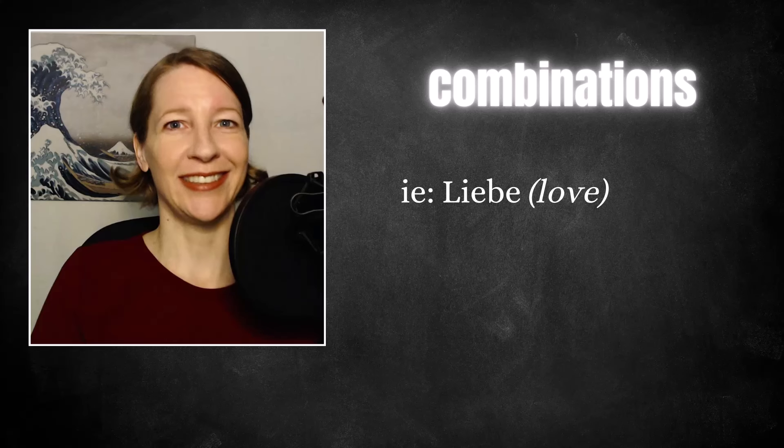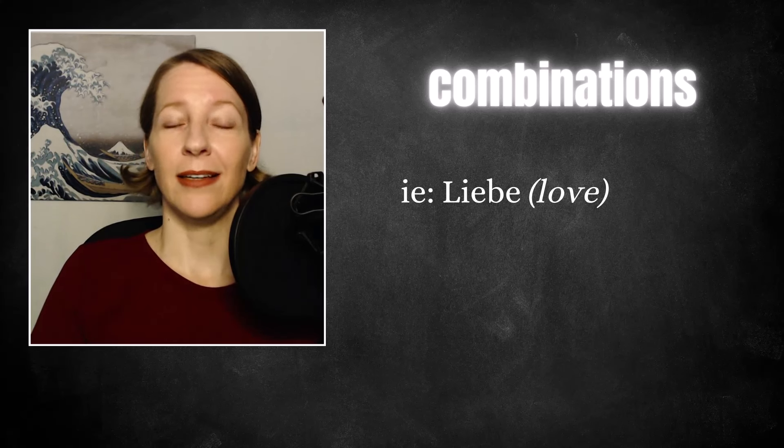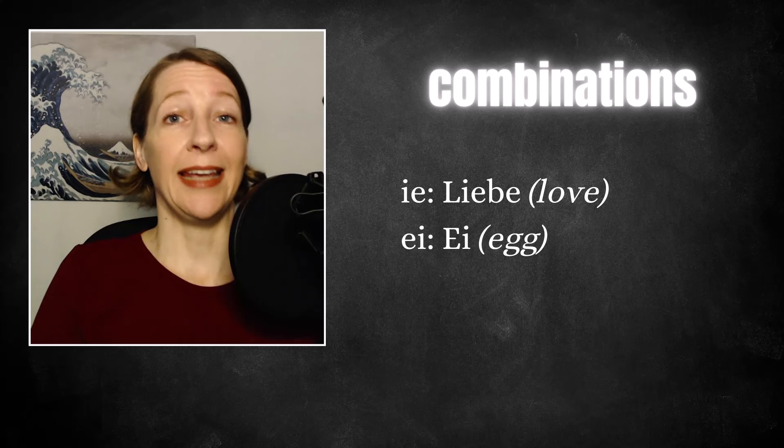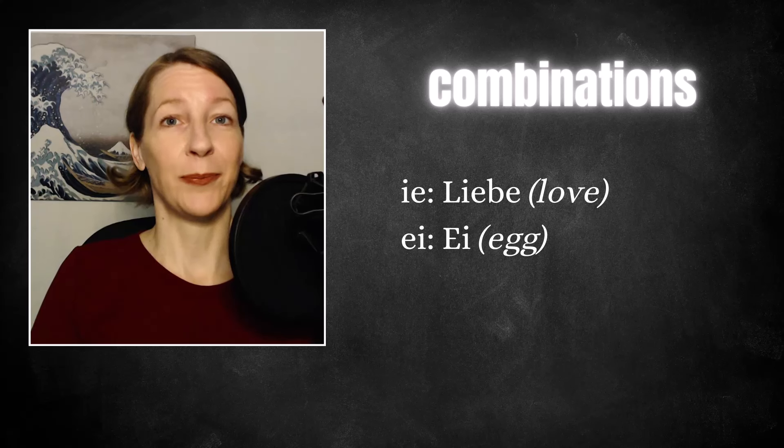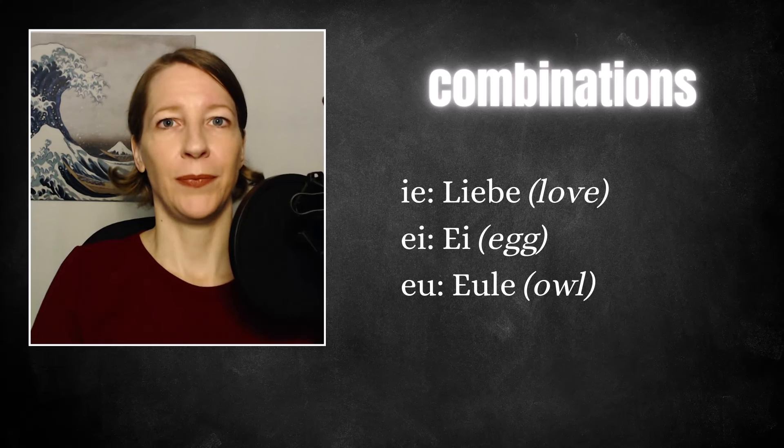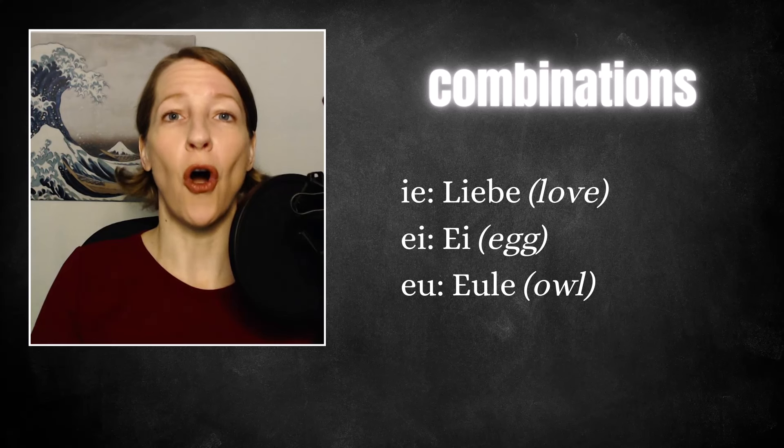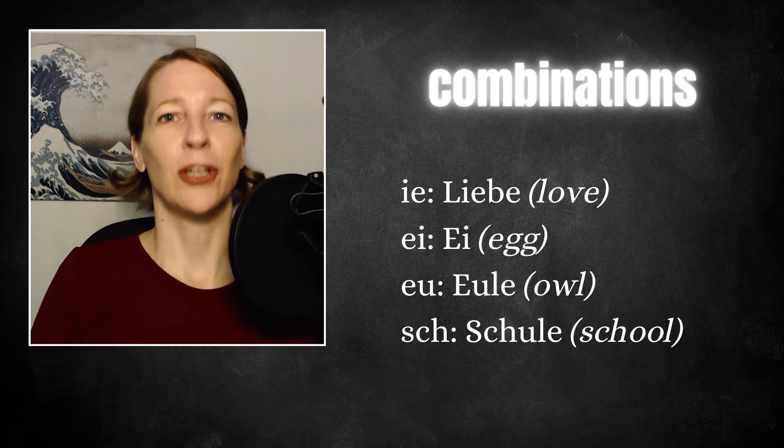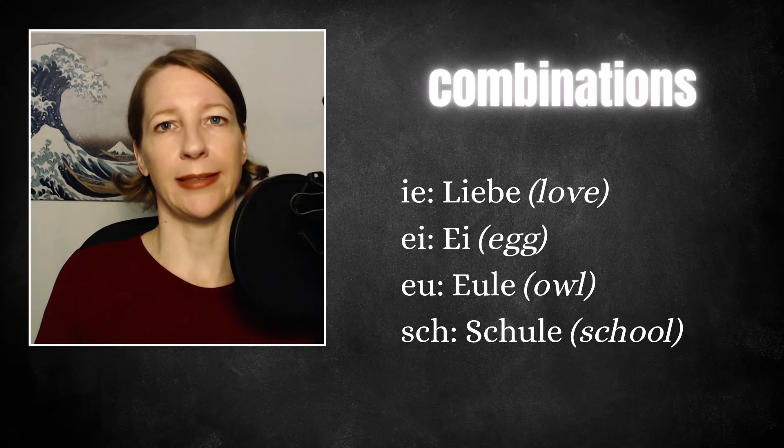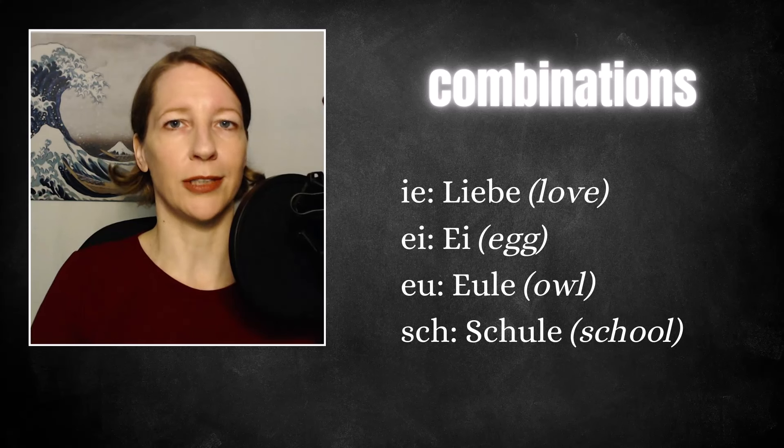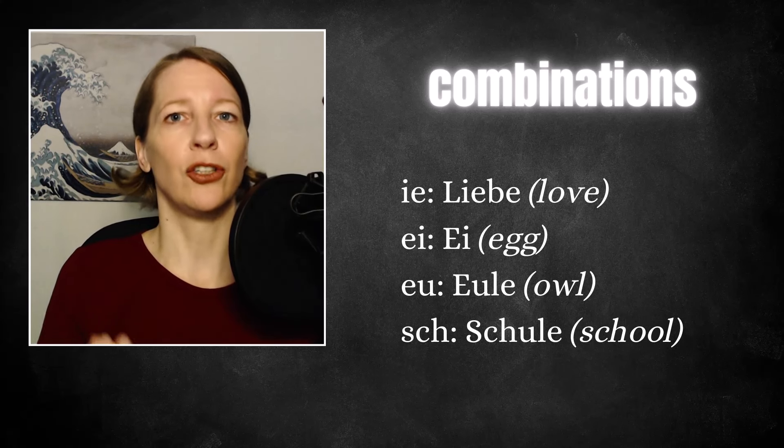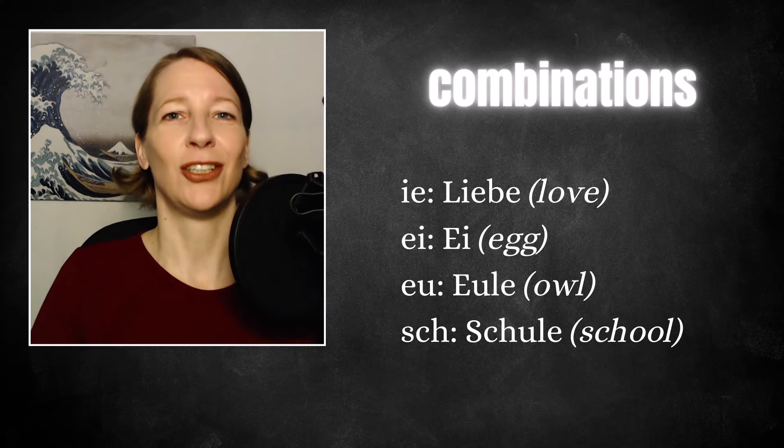And some letter combinations you need to know about. The IE is pronounced like a long E. As in Liebe. The EI is pronounced like the English I. And Ei is actually a word. Then we have the combination EU which is pronounced Oy. Neu. SCH. That is our SH. That is also a sound that can come out a bit stronger or less strong depending on the person and the region. So some people use that very strong SH. And others say SH which is closer to the English SH.